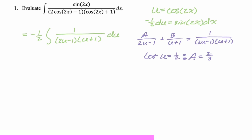When you let u equal negative 1, we're going to be finding b. You cover up the (u plus 1), plug in, and get 1 over negative 3, so b equals negative 1/3.